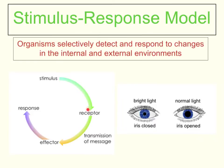Our body can detect that stimulus using a receptor. In this example, the receptor is the eye itself and the cells in the eye which detect the change in light — that is called our receptor. The next part of the Stimulus Response Model is the transmission of a message. If you've watched Coordination and Control Part 1, you would have learnt about the two types of message, which are nerve messages and hormone messages. In this situation, where we have the change in the pupil circumference, we're looking at the transmission of a nerve message.